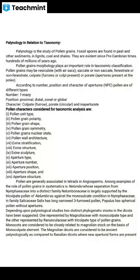The pollen characters considered for taxonomic analysis include: pollen polarity, pollen grain shape, pollen grain symmetry, pollen grain nuclear state, pollen wall architecture, exine stratification, exine structure, exine sculpture, aperture type, aperture number, aperture position, aperture shape, and aperture structure.